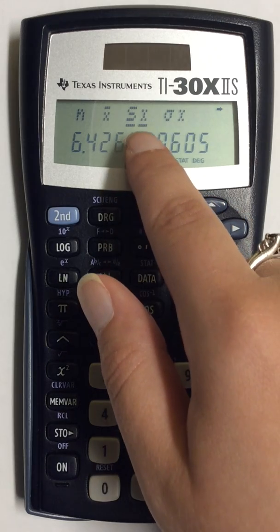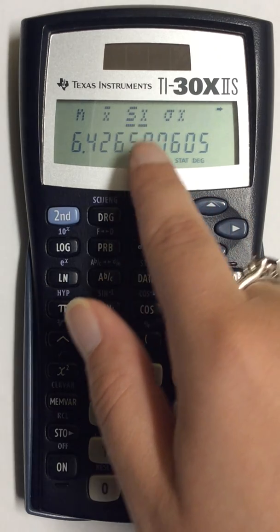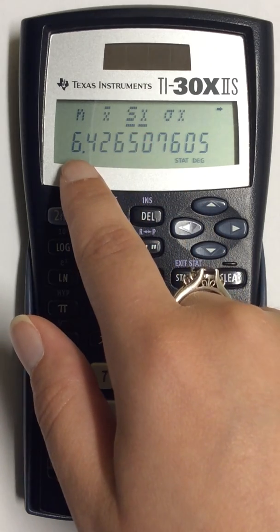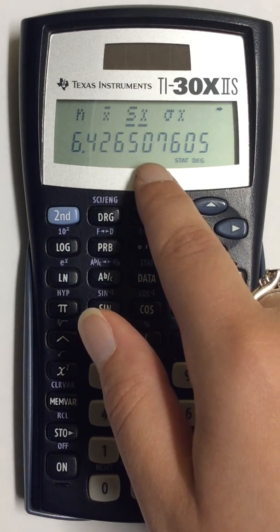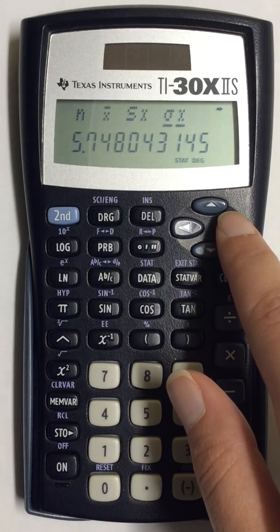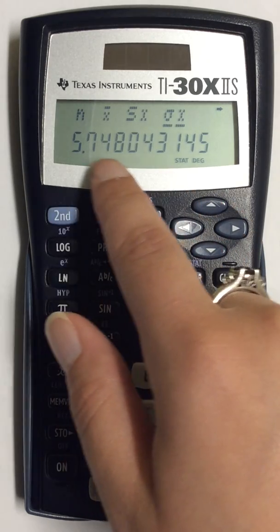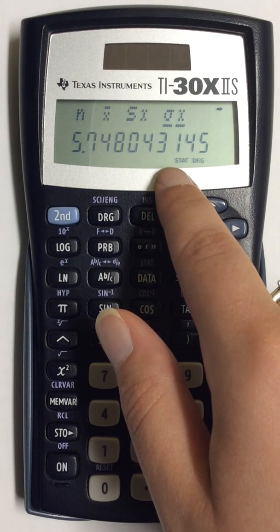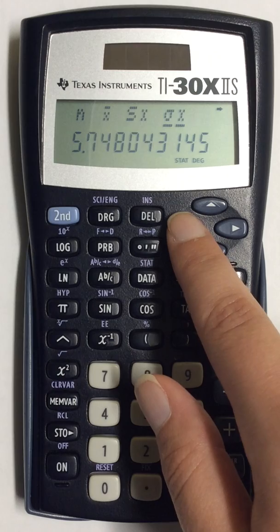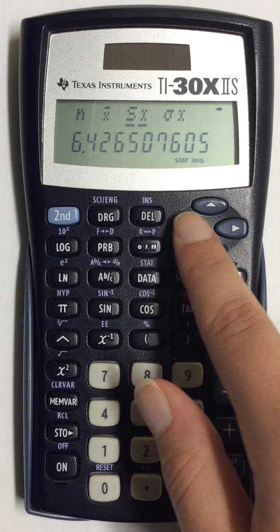So if I underline SX that would be my sample standard deviation, that is this number on the screen. If I go over one more spot this number here would be my population standard deviation. So I can go back and forth and find both.